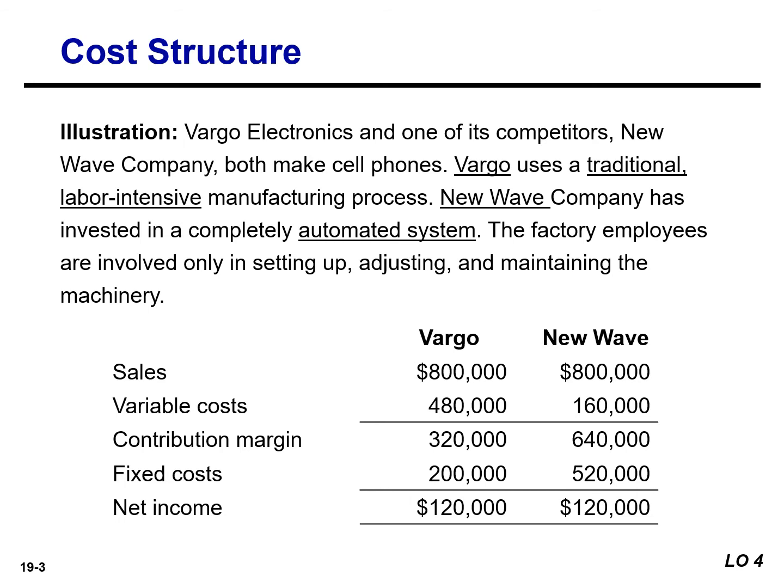Let's discuss their CVP income statements. Both companies have the same sales and the same net income. However, because of the differences in their cost structure, they differ greatly in the risk and rewards related to increasing or decreasing sales. Let's evaluate this impact.